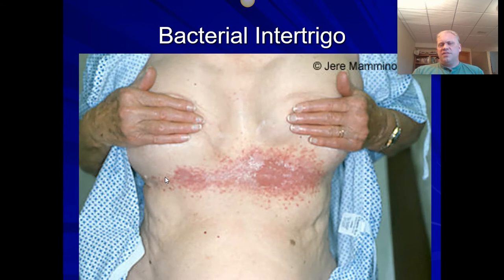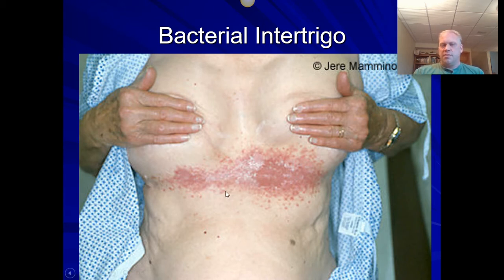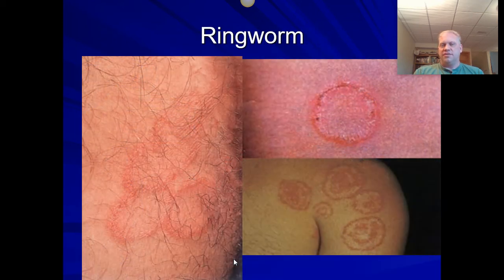We see another condition called bacterial intertrigo. This is found in areas of skin folds. The name itself tells you it's bacterial, so you've got to make sure you don't treat it like athlete's foot, which is a fungus — you've got to use some kind of antibiotic cream. What you're seeing is moisture building up somewhere that's warm, dark, and moist. Those three things are great for fostering bacteria, so you get that rash and everything that goes with it.